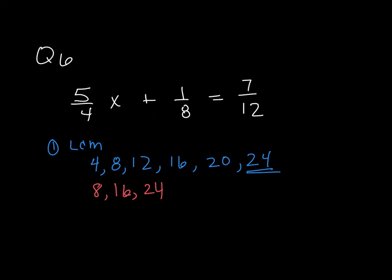And for the last one, if I look at 12, my last fraction, well, 12 times 1 is 12, 12 times 2 is 24. So 24 is definitely my lowest common multiple. Now, I take my lowest common multiple and multiply every single term in this, both sides of the equation.